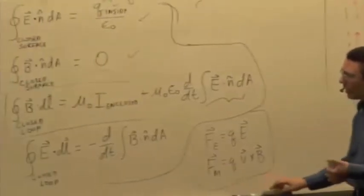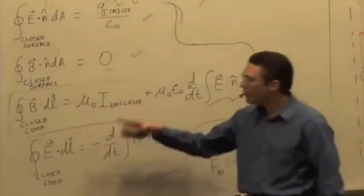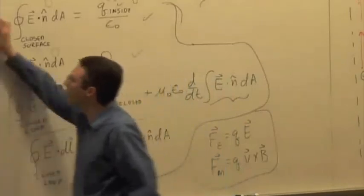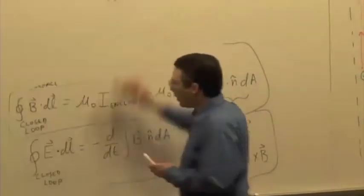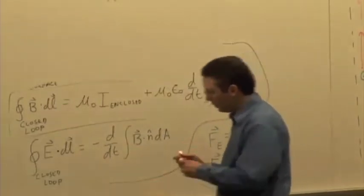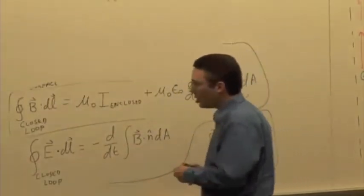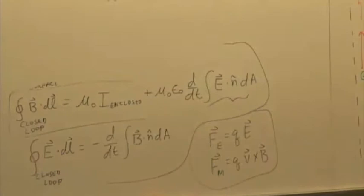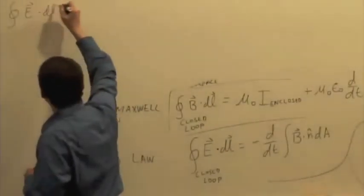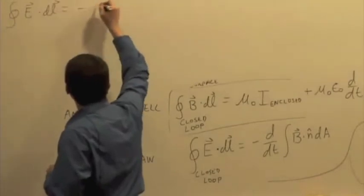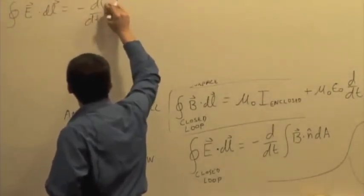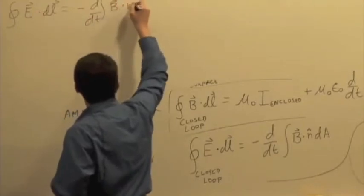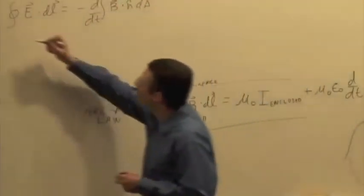Now we've got to think about the two that are more tricky, which are Ampere-Maxwell and Faraday's law. We're going to look at Faraday's law first. E dot delta L is equal to negative d/dt of the magnetic flux through an area. So this is Faraday.